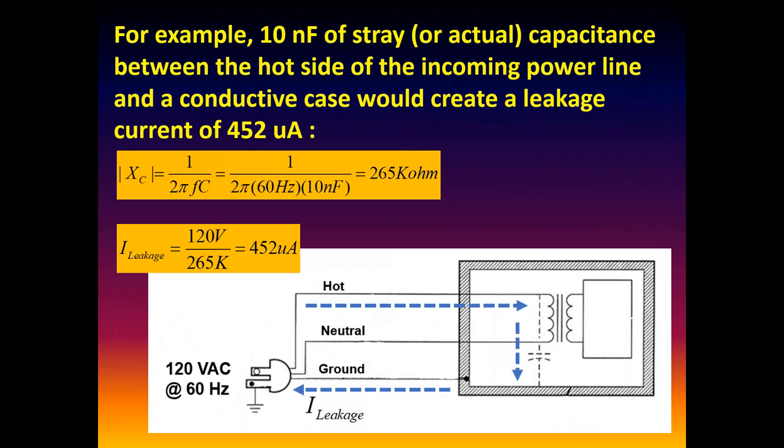For example, if we just had 10 nanofarads, 10 to the minus 9th, of stray capacitance between the hot side and the case, what the basic theory tells us is that the resistance of that stray capacitance is about 265 kilohms. 265 kilohms at 120 volts RMS. The leakage current that we would measure is around 450 microamps, just from that stray capacitance. Not even a physical capacitor there. Again, just the proximity of the conductors. This is why in the old days, too, if we saw something like that, we'd get all nuts and crazy, and we put an isolation transformer in it. You know, adding a whole other piece of equipment that costs weight to bring that leakage current down.